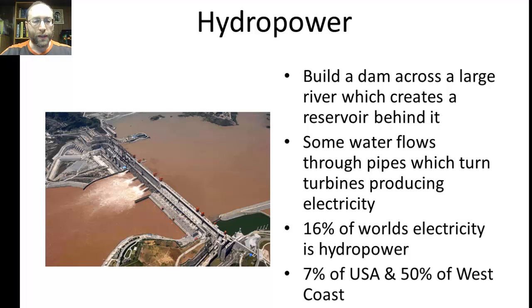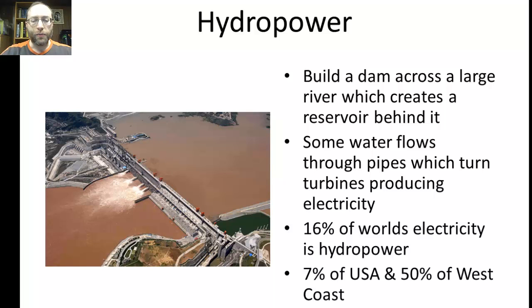You can see the reservoir behind the dam, and off to the side there are locks where ships can go through. Water comes out of four pipes, and before coming out, the water turns turbines producing electricity. Sixteen percent of the world's electricity is hydropower. In the United States it's 7% altogether, but it's 50% of electricity on the West Coast, produced by dams like Glen Canyon Dam and Hoover Dam. You also get hydropower in New York from the plant at Niagara Falls.